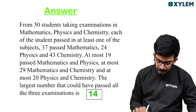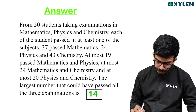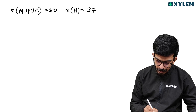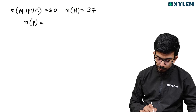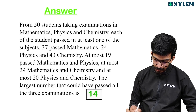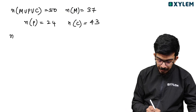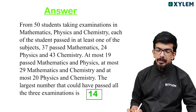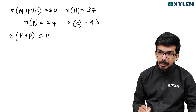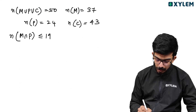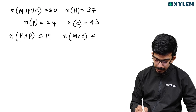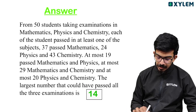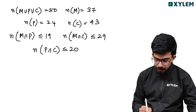This is an inequality problem. The number of M union P union C is 50. Number of M is 37, number of P is 24, number of C is 43. Number of M intersection P is at most 19, so M∩P ≤ 19. At most 29, so M∩C ≤ 29. And at most 20 for physics and chemistry, so P∩C ≤ 20.